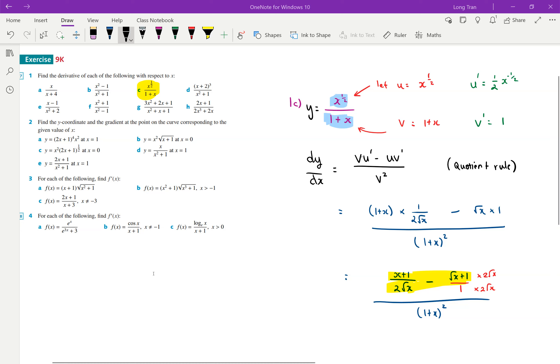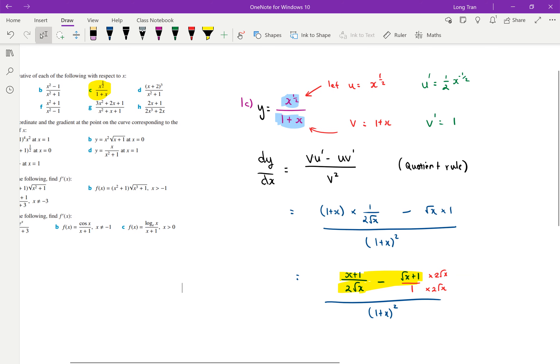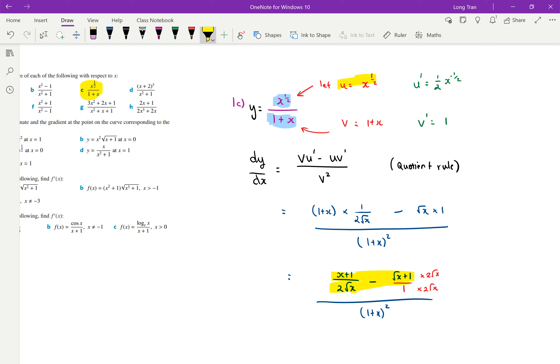Looking at exercise 9k, question 1c. I started off using quotient rule for this one, so I let u equal to x to the power of half and then v equals this.